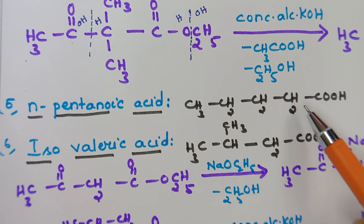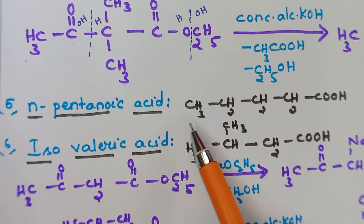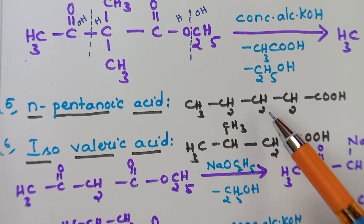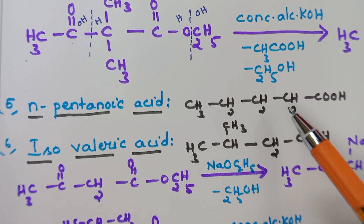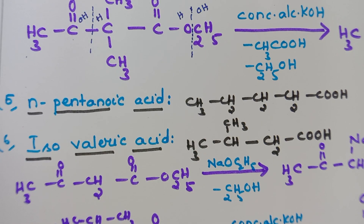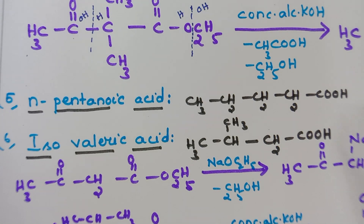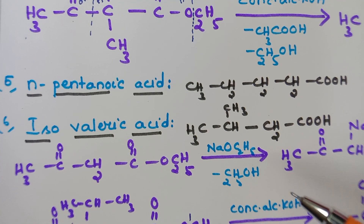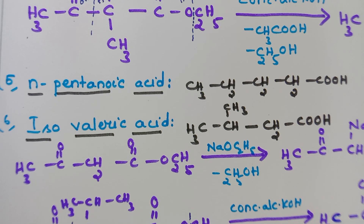The next compound, n-pentanoic acid, has all five carbons in a straight chain: CH₃CH₂CH₂CH₂COOH. This one I am also leaving for you to do on your own. You will enjoy organic chemistry — if you understand the concept it will be very easy for you.